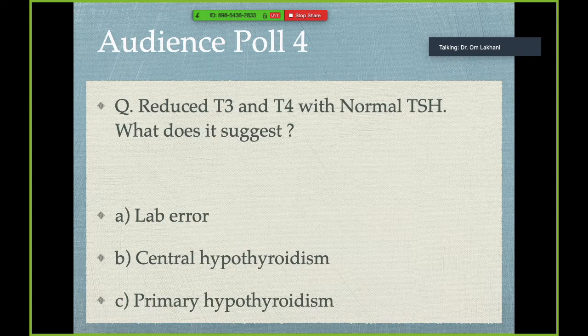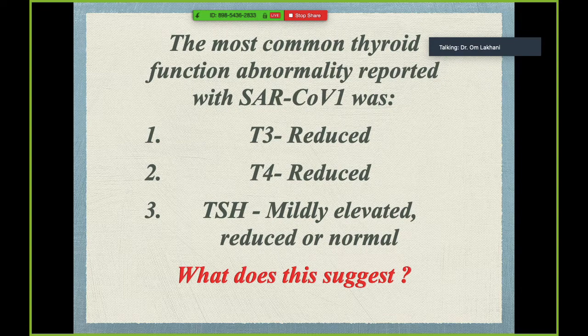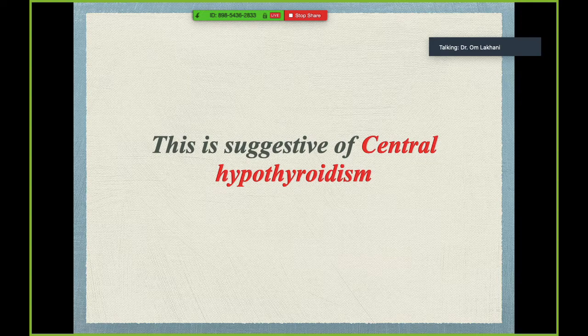Another audience poll: a patient presents with reduced T3 and T4 with a normal TSH — does this suggest a lab error, central hypothyroidism, or primary hypothyroidism? The most common thyroid function abnormality with SARS-CoV-1 was central hypothyroidism — reduced T3, reduced T4 with either reduced, normal, or mildly elevated TSH up to around 10. This was suggestive of central hypothyroidism, likely from impaction of the pituitary gland.